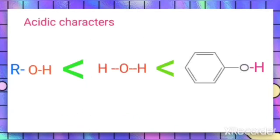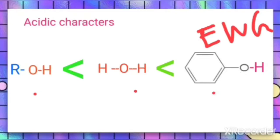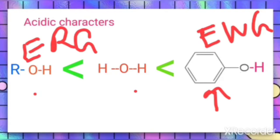Because of the electron-withdrawing group (EWG), phenol is more acidic. When we compare alcohol, water, and phenol: in phenol, the EWG increases acidic character; in alcohol, the electron-releasing group R decreases acidic character; and water, having no such group, falls in between. So the order is: phenol > water > alcohol. Presence of R decreases acidic character, while presence of a phenyl group or EWG increases it.